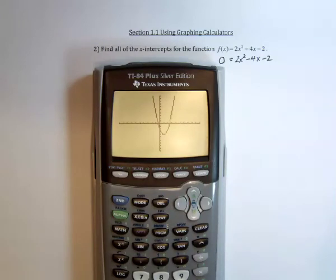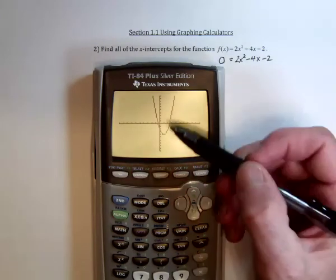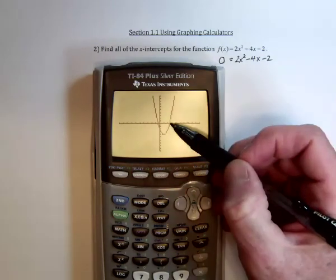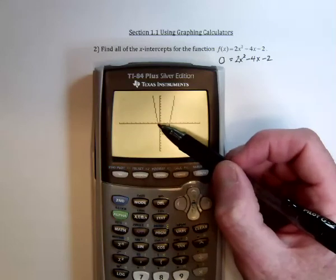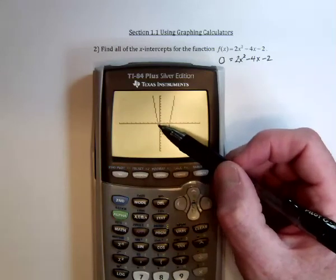There's the parabola. There are two places where it crosses the x-axis, right here at about 2.5, and right here at about negative 0.5.